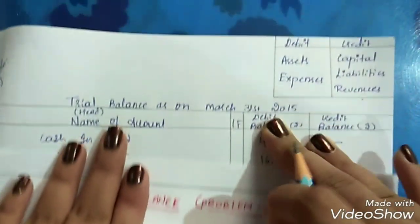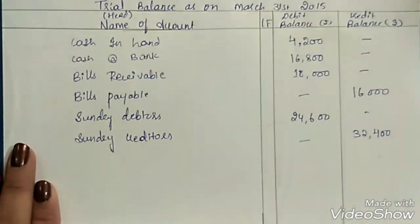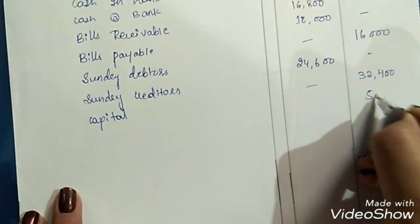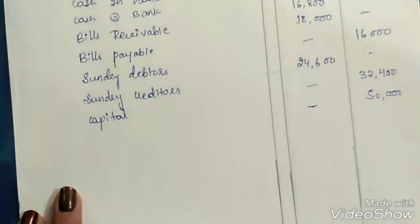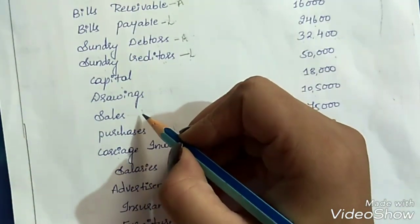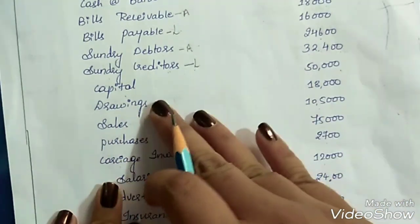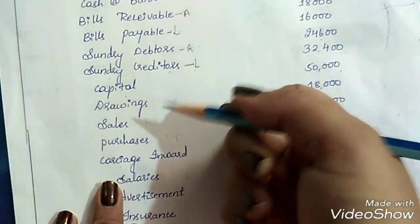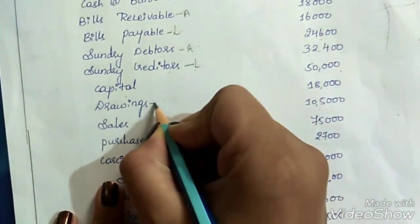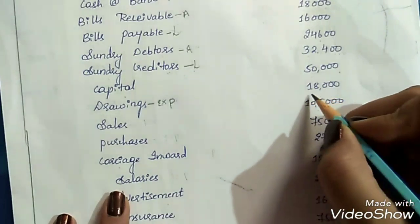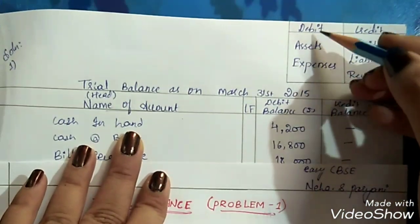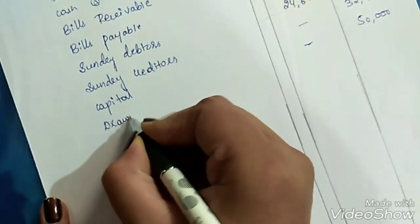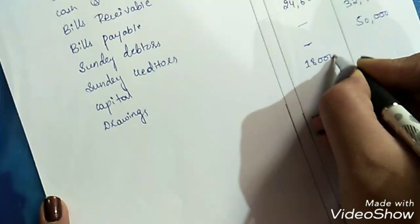Next is capital. Capital also needs to be recorded on the credit side. Amount on credit side is Rs. 50,000. Next is drawings. Drawings refers to the amount withdrawn by the owner from the business organization, and it is treated as an expense for the business because the business has to pay a certain amount to the owner in the form of drawings. Amount is Rs. 18,000, and since expenses are recorded on the debit side, record drawings there.